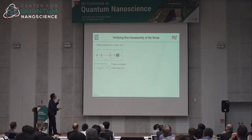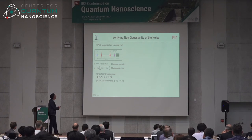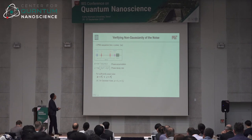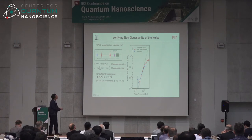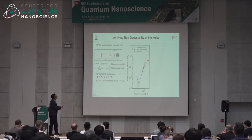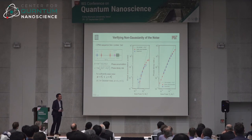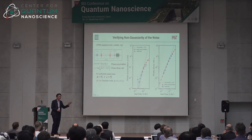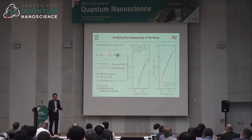For sufficiently weak non-Gaussian noise, the phase goes as noise power cubed, and the phase decay rate goes as power squared. We measured this as a function of noise power and confirmed the cubic relationship at lower powers. At higher powers it deviates because fifth-order terms kick in. Similarly, the phase decay rate follows p-squared at low power, then p-to-the-fourth and p-to-the-sixth at higher powers. This confirms the non-Gaussian behavior at leading order.